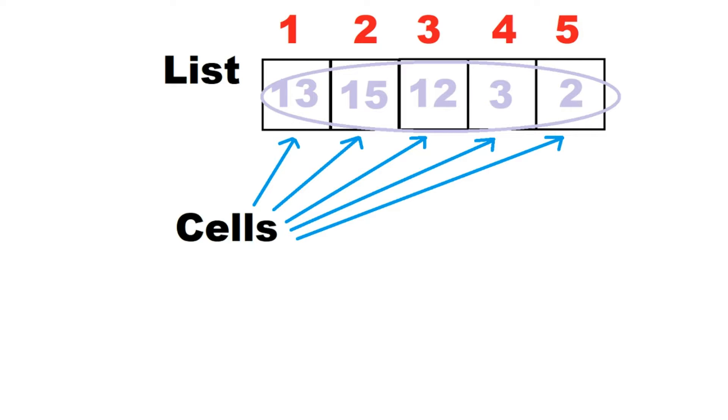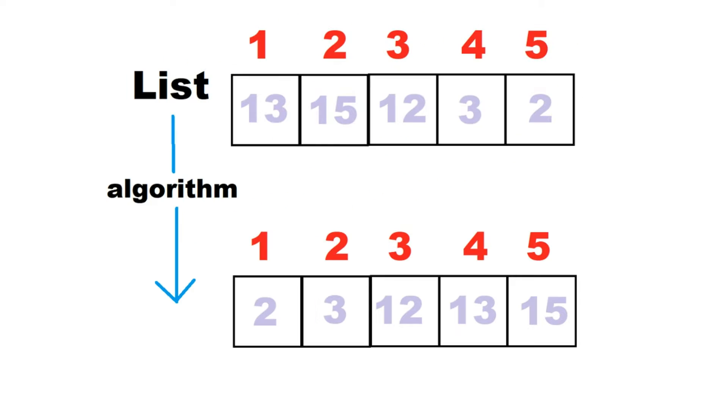What a sorting algorithm does is that it takes this list, or any list, and gives you a new list where the cells are in order. Notice that the names of the cells stayed the same. That never changes. So that's easy enough.